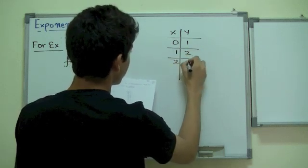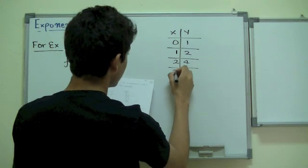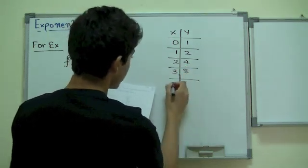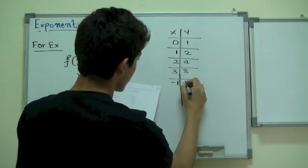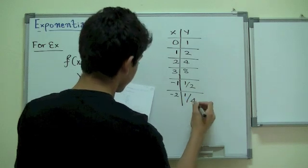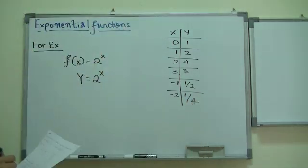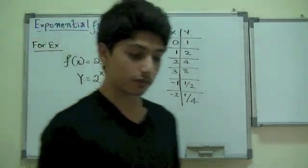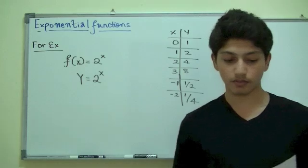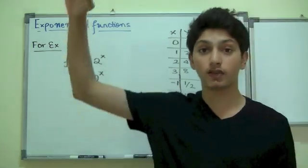Now, what happens if we plug in negative exponent? If we plug in negative 1, it would be 1 over 2. If we plug in negative 2, it would be 1 over 4 and things along those lines. Now, when you graph this, you will see that range is all positive numbers. Domain is real numbers and the graph is continuously increasing.